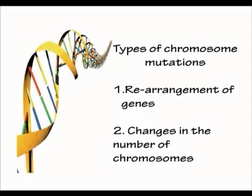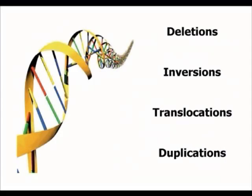Now chromosomes can mutate in two main ways. First of all, there can be a rearrangement of the genes where the chromosome actually splits up and parts of it move around. Or we could end up with a different actual number of chromosomes in a cell, caused by something called non-disjunction, but we'll talk about that later. We're going to start off by looking at that first category where genes or chromosomes are actually rearranged. They can be split into four different ways: deletions, inversions, translocations, and duplications.